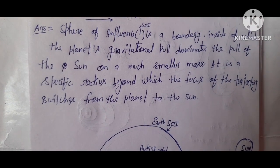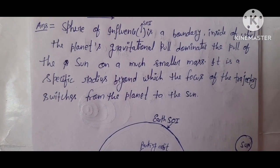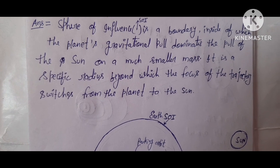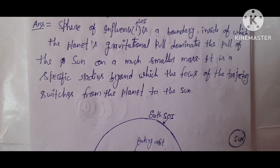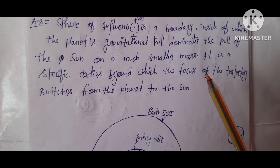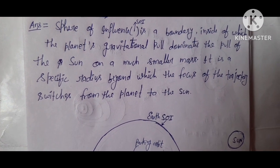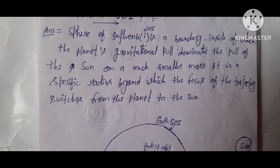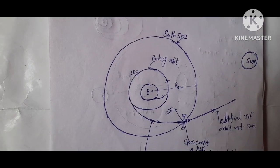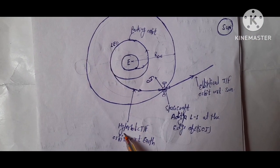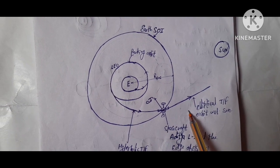So friends, in patch conic approximation used in estimating the trajectory of bodies moving between the neighborhood of different masses using a two-body approximation like ellipses as well as hyperbola. You see here, this is a hyperbola trajectory and this is an elliptical trajectory.